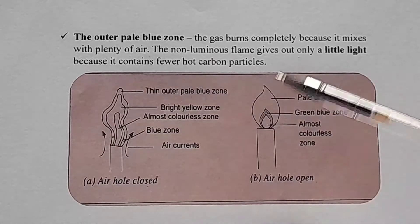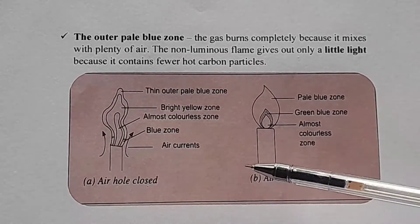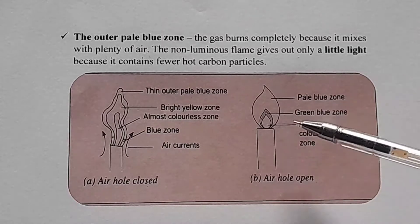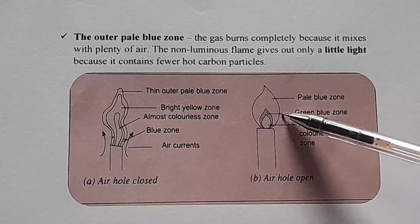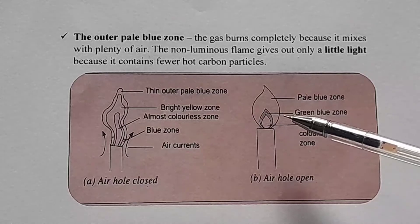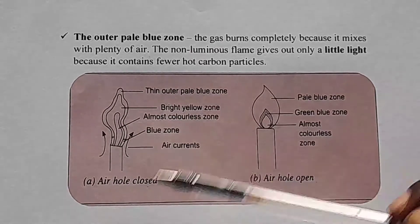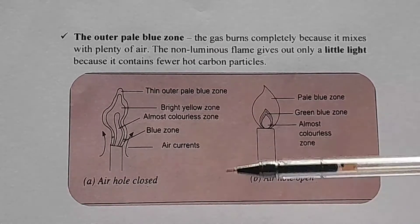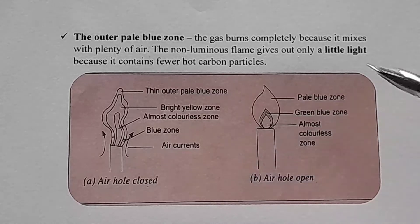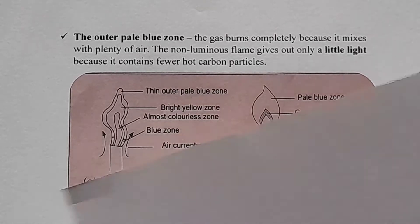During the exam, they will draw a diagram and ask you to name the above flame. You only check the number of zones you have. If you have three zones, that means you are dealing with non-luminous flame. If you have four zones, that means it is luminous flame. They may also draw a diagram and ask you to name part A, part B, and part C.